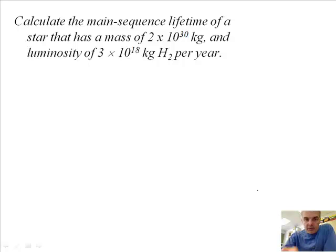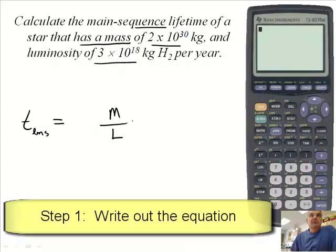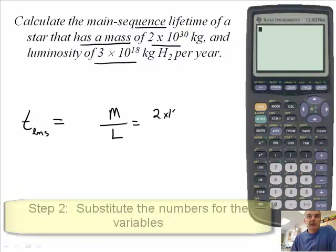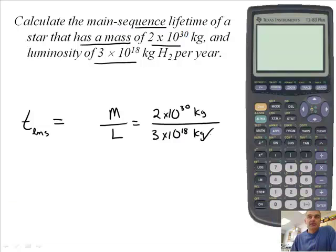Let's do a mathematical calculation. Get out your calculator. Calculate the main-sequence lifetime of a star that has a mass of 2 times 10 to the 30th kilogram and a luminosity of 3 times 10 to the 18th kilograms of hydrogen per year. It's essentially a division problem. The t_lms, lifetime in a main-sequence star, is equal to the mass over the luminosity. We'll say 2 times 10 to the 30th kilograms divided by 3 times 10 to the 18th kilograms per year. Units of kilograms cancels, and since the years is on the bottom of the fraction, it will come on the top, and we're going to get x number of years.